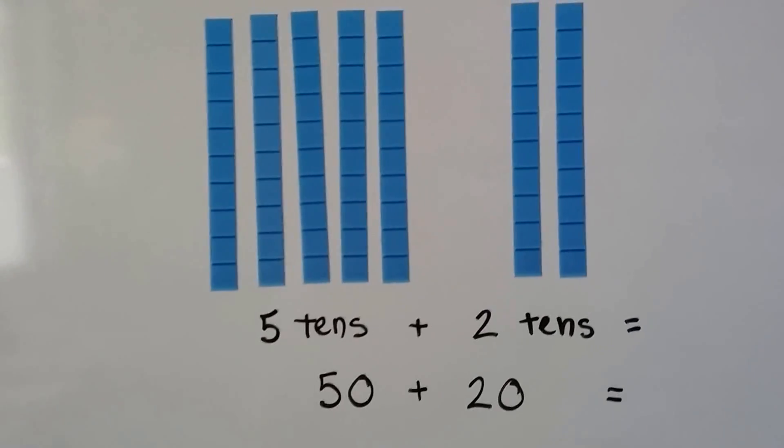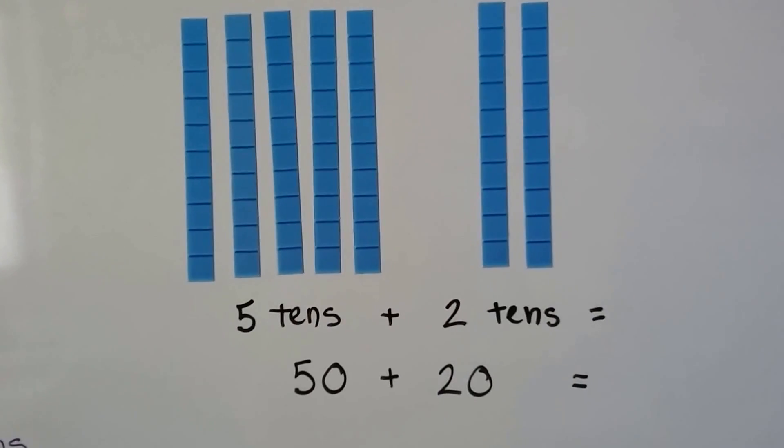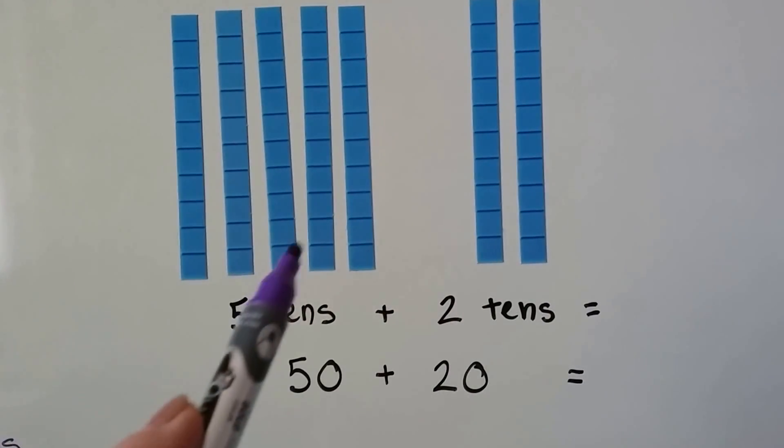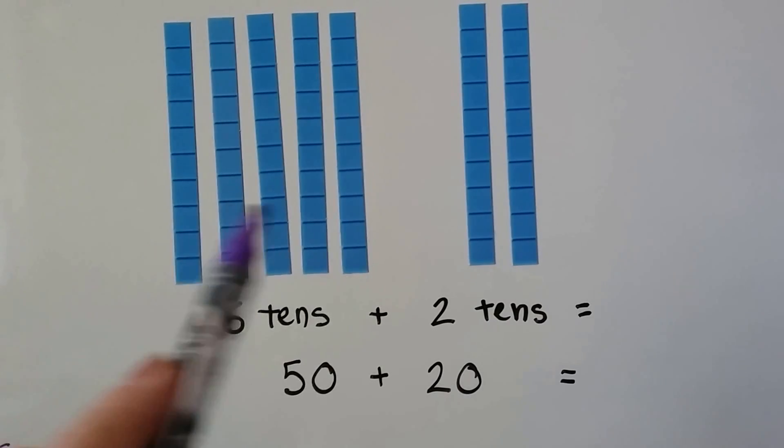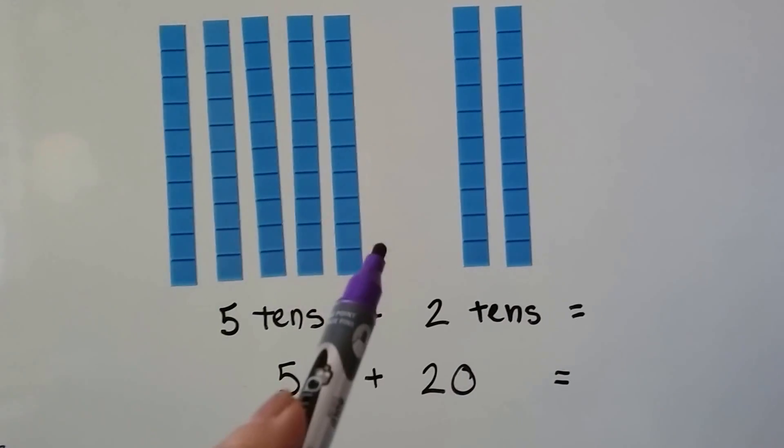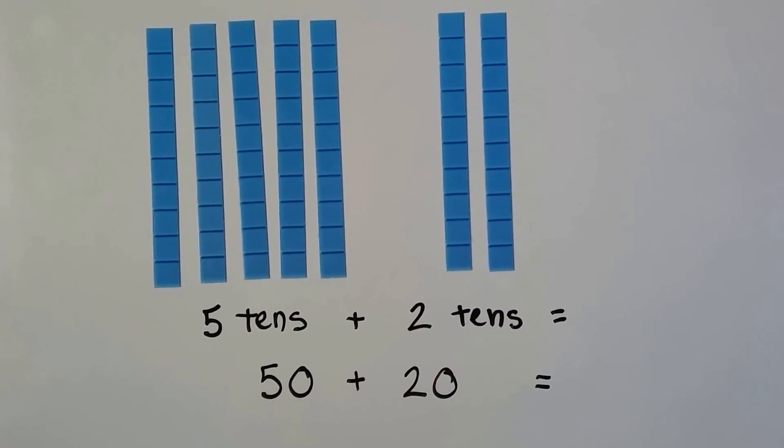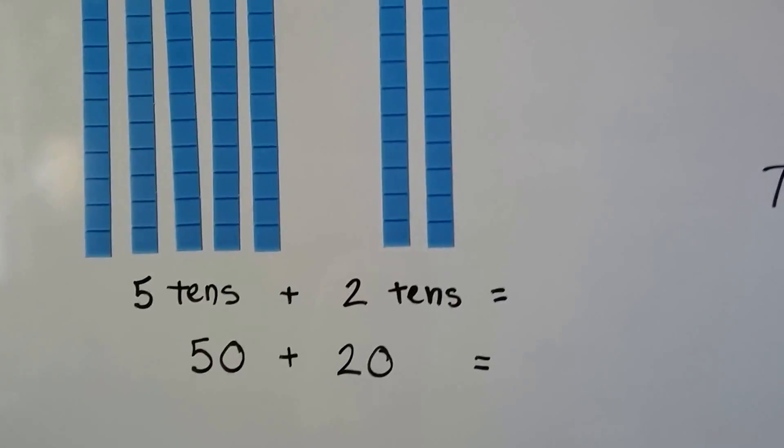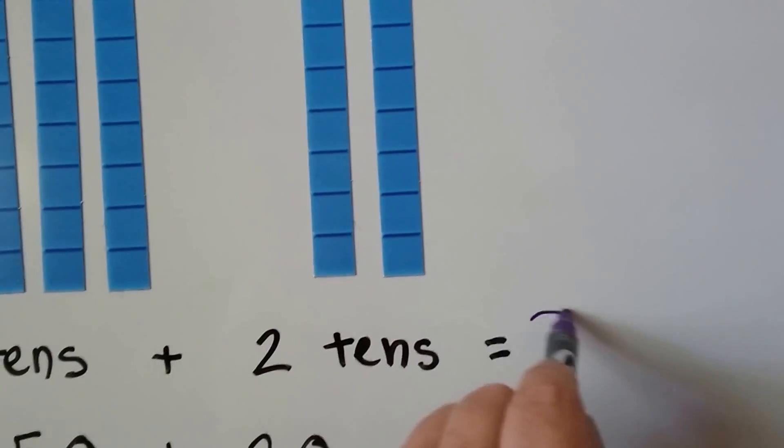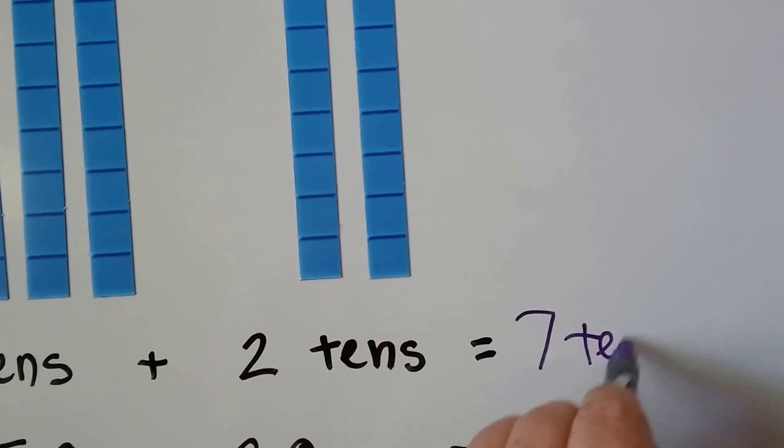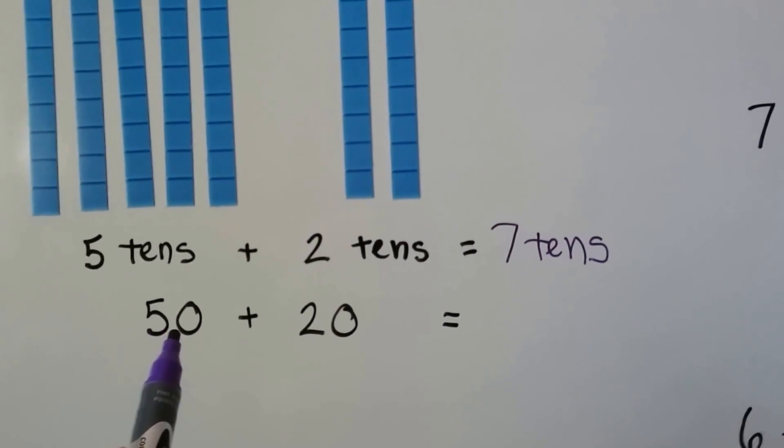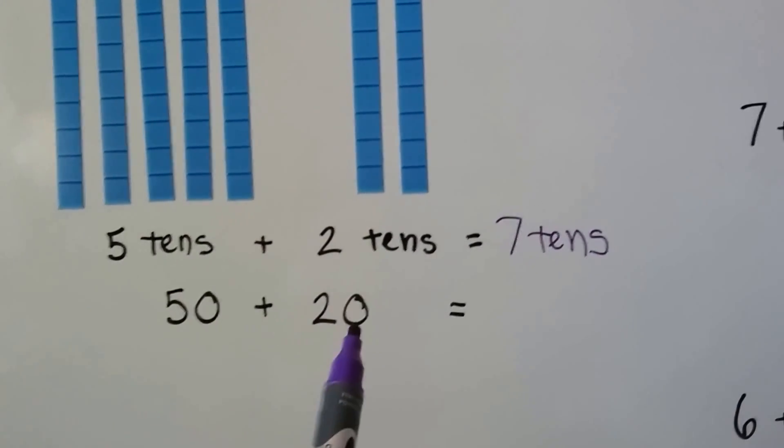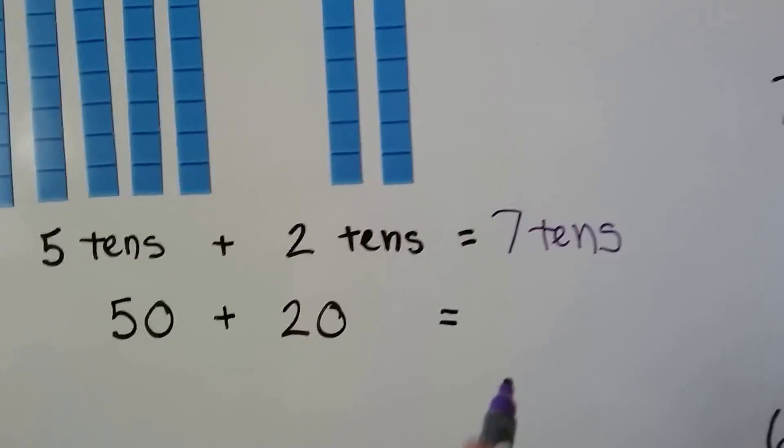Let's try another one. Now we have five tens plus two tens. We've got five plus one, two. We count on six, seven. That's seven tens. Just like the three plus four, isn't it? It's just another way to make a seven. Fifty plus twenty equals seventy.